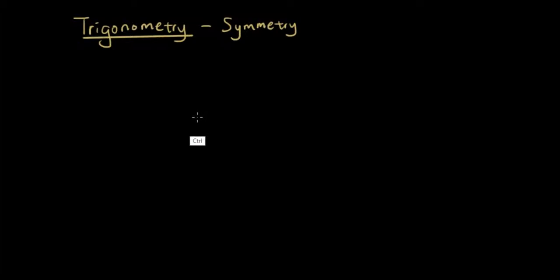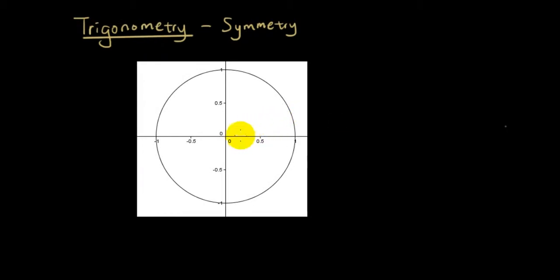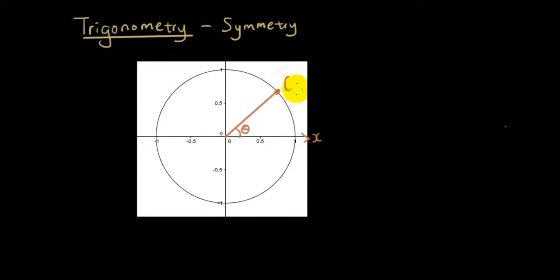If you guys remember the unit circle, which I'm going to bring up now. If I have a unit circle and I draw the radius of this circle starting from the origin to the circumference, then the angle that this radius creates with the positive x-axis is called Theta. And the point on the circumference created from the radius has an x-coordinate of cos Theta and a y-coordinate of sin Theta.